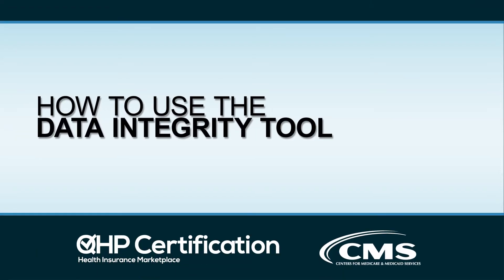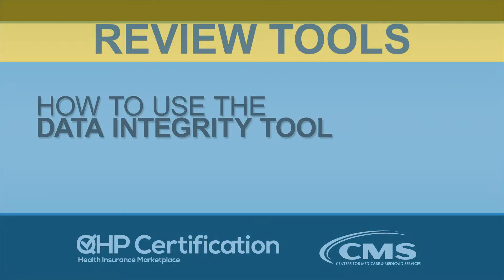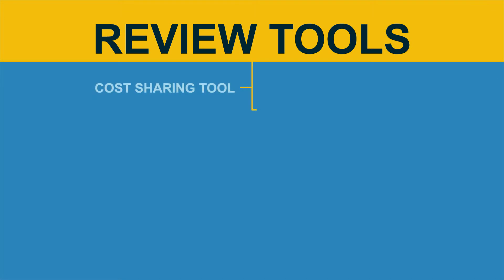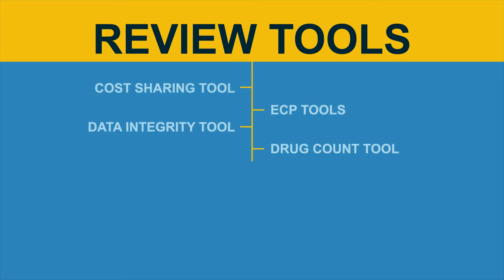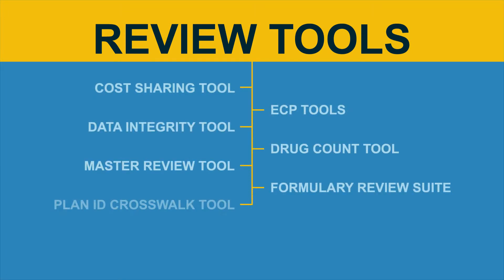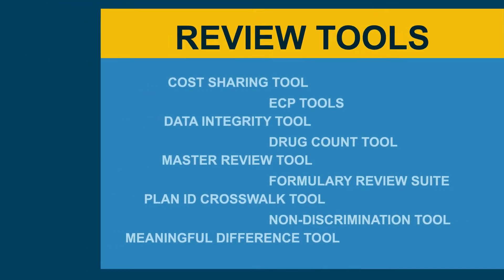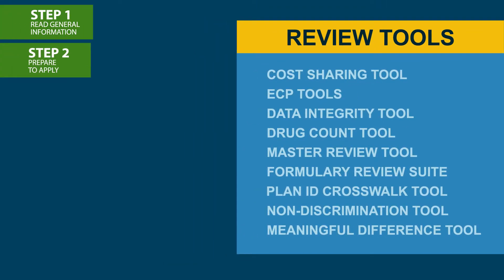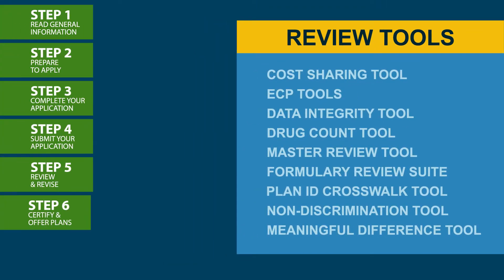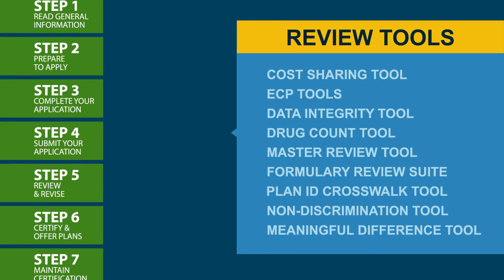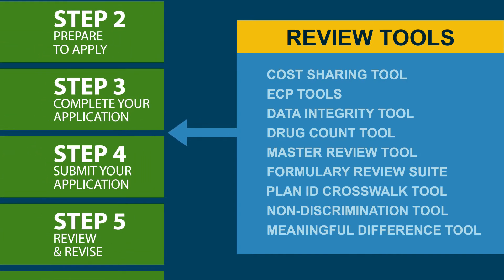How to use the Data Integrity Tool. Did you know that CMS provides review tools that issuers and states can use to prepare for the QHP application process? These review tools allow you to check for errors within your QHP application that would result in correction notices after submission. Issuers are encouraged to use these tools to identify and correct data errors prior to submitting application data in order to reduce the number of required corrections identified during CMS's reviews.